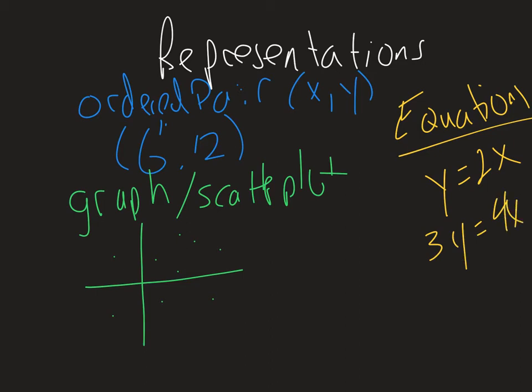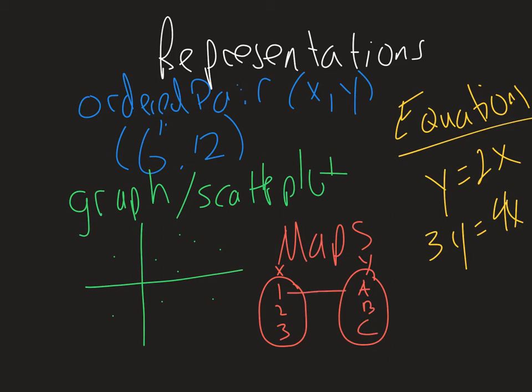And then another one we have is maps, or sometimes referred to as a mapping. The idea is you have pools of numbers, so like if I have 1, 2, 3, and this is my input, my x values, and this is my output, these are my y values, and I'm just pairing them. Then I can have maybe 1 goes to A and B, 2 goes to A, 3 goes to C, but also to B. We're using these arrows to kind of make our ordered pairs, so like one of the ordered pairs would be 1A, so to speak.